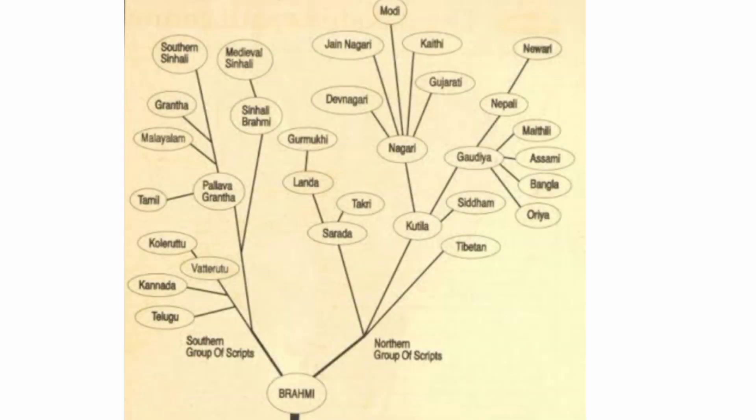Other regional languages that developed were Assamese, Kannada, Telugu, Malayalam and Tamil. The Puranas, the Ramayanas and Mahabharatas came to be translated into different regional languages.